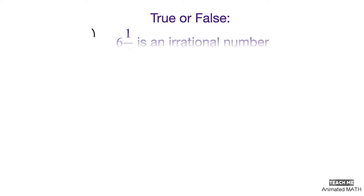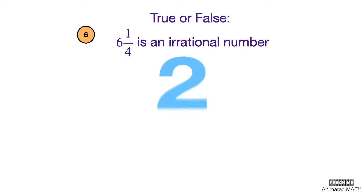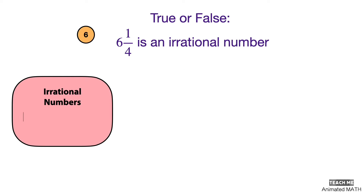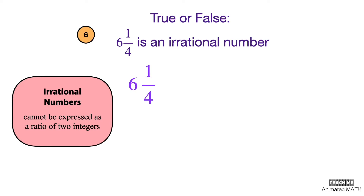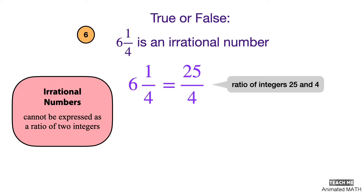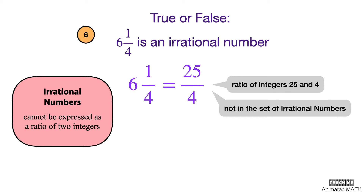Six and one-fourth is an irrational number. The set of irrational numbers cannot be expressed as a ratio of two integers. Six and one-fourth is the same as 25 over 4, which is the ratio of the integers 25 and 4. This means it is not in the set of irrational numbers, so the answer is false.